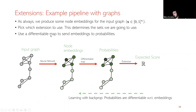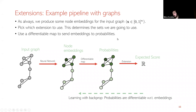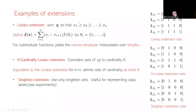In a pipeline with graphs: we produce node embeddings, choose which extension to use, and the choice of extension determines which sets we use. We apply a differentiable map to send embeddings to probabilities, calculate the expectation, and backpropagate through those probabilities. This gives us a pathway back through the computation graph.